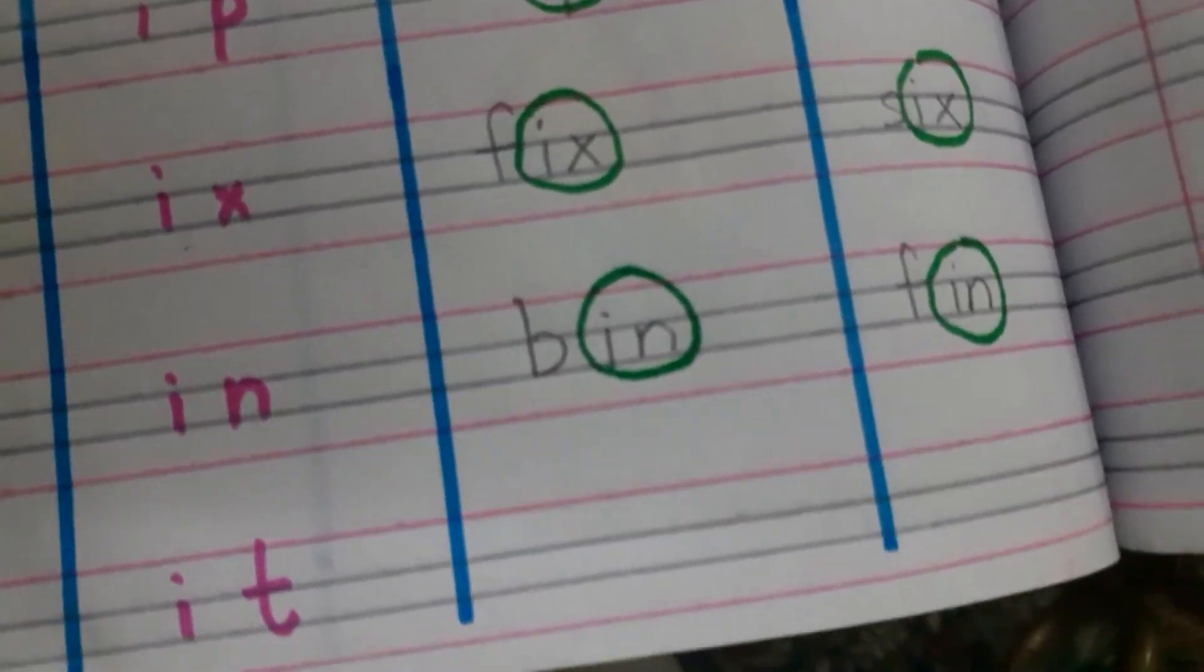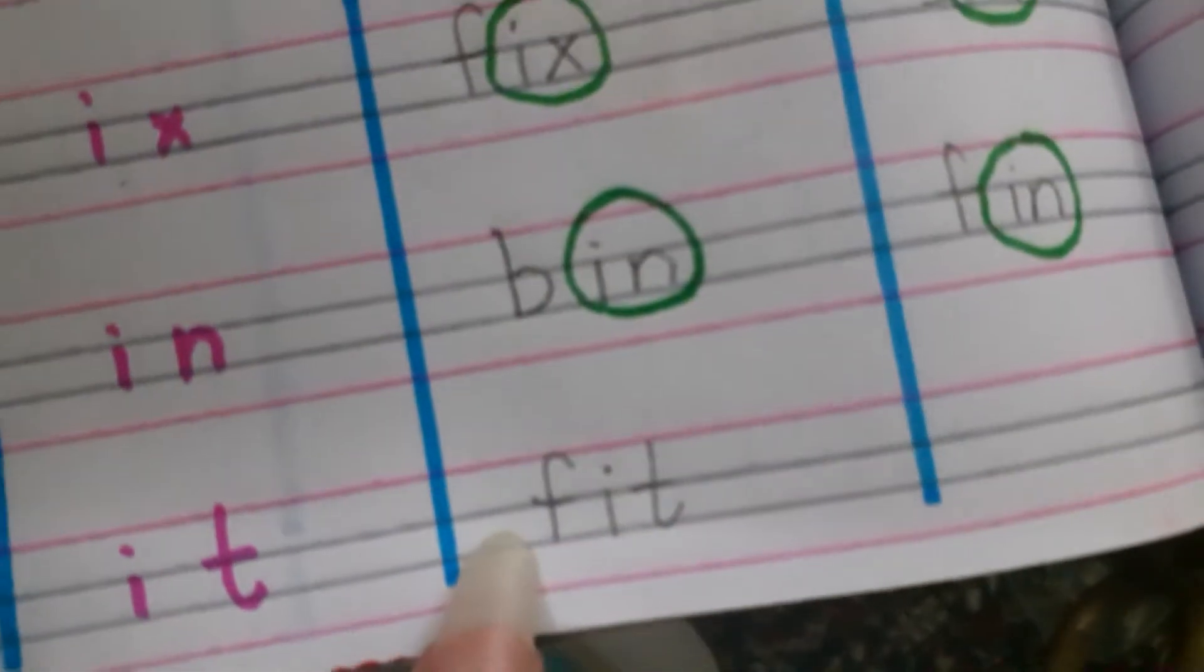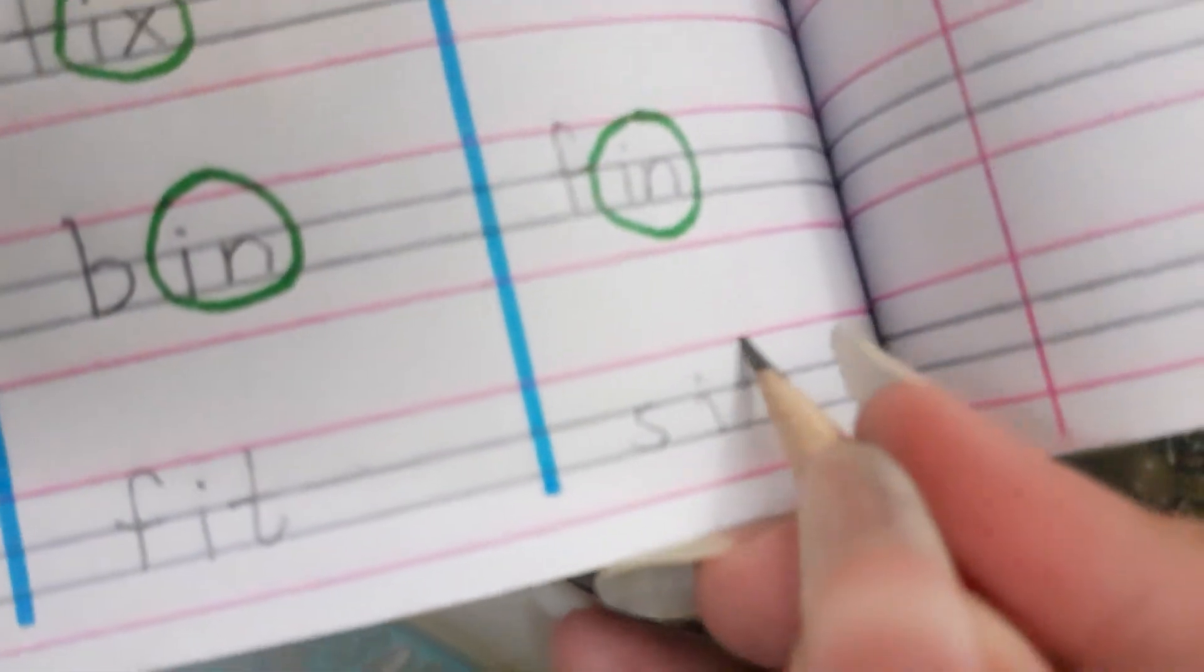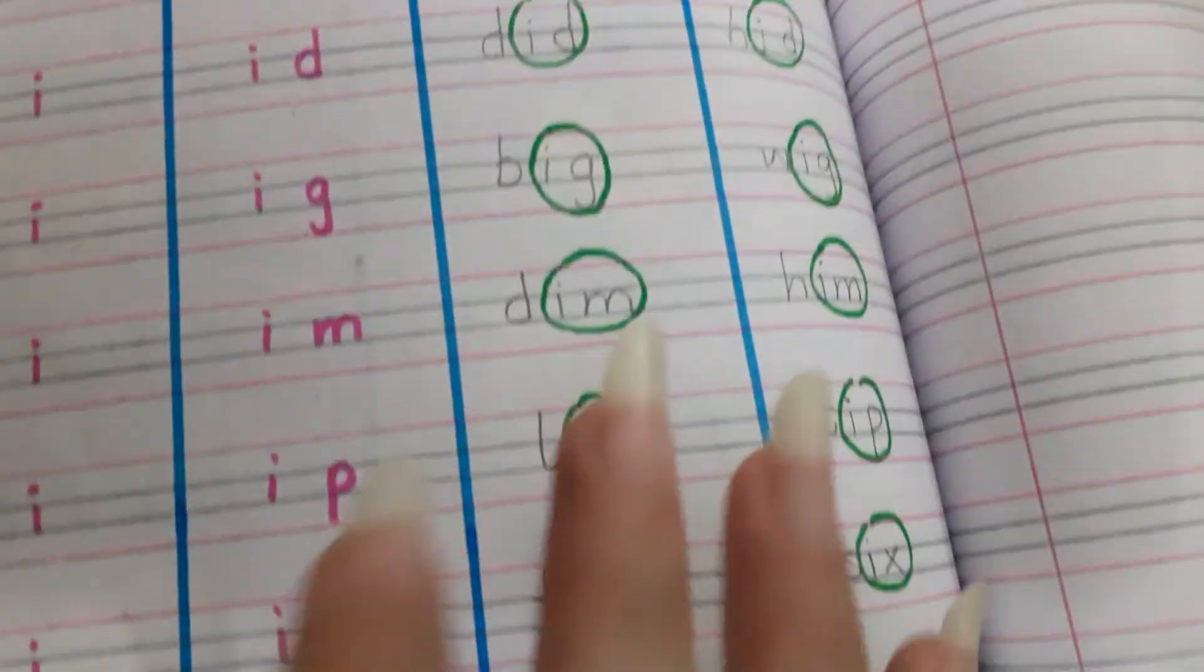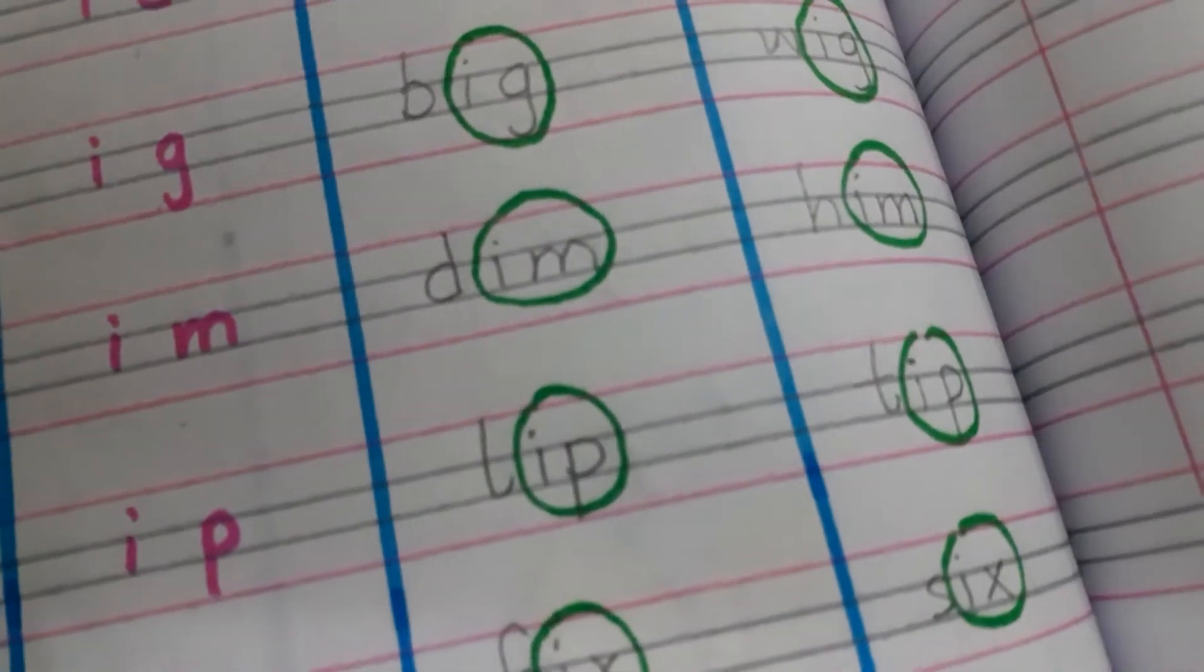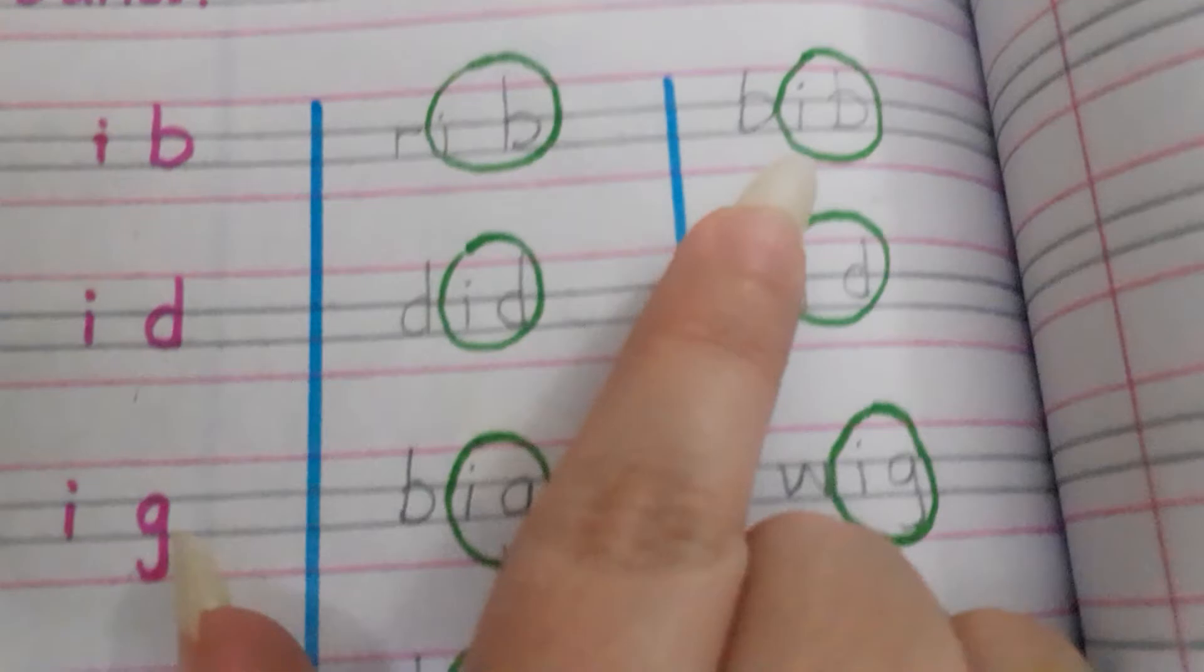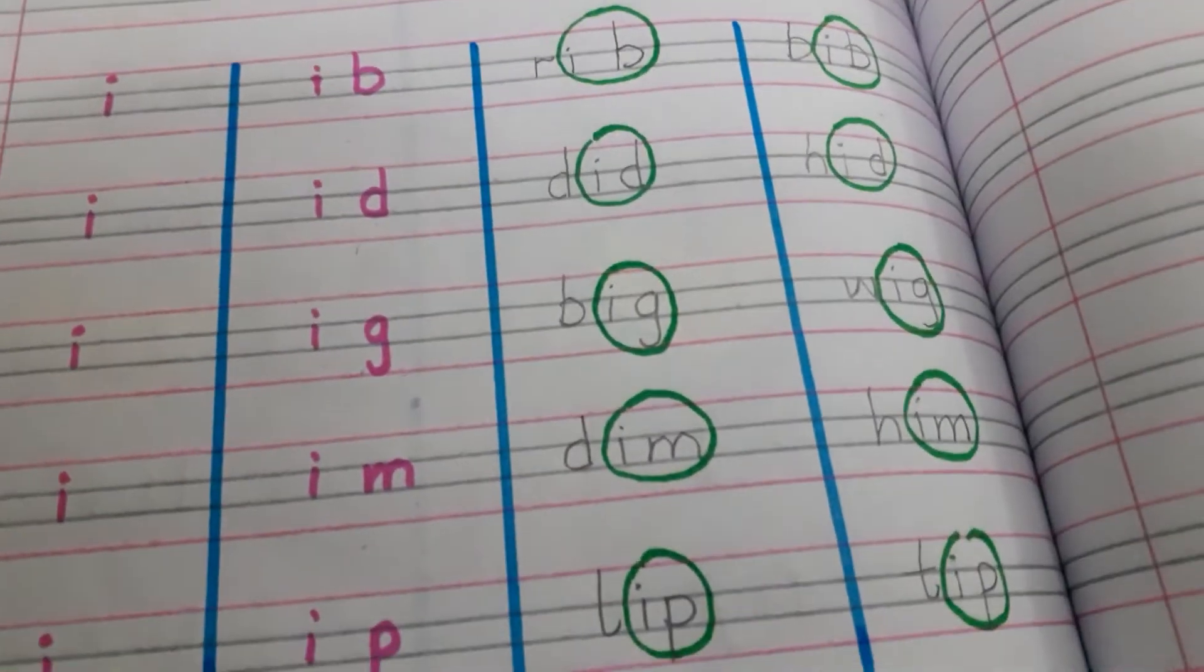And the last word is it. I'm going to write here fit and sit. We need to circle the ending sound. It, it. Why we make these circles? So that you can focus and emphasize on the last ending sound that will clear you that these are the rhyming words because all are having the same ending sound.